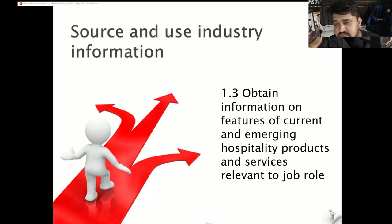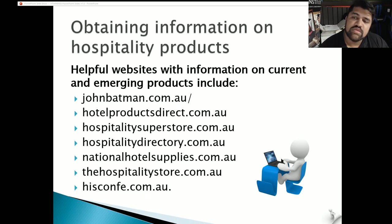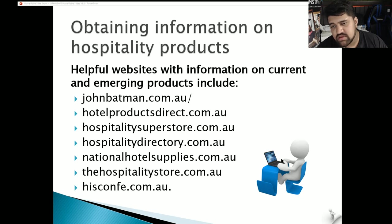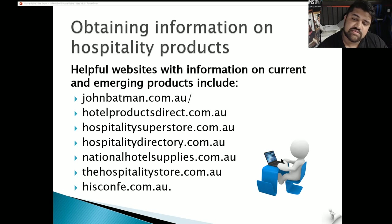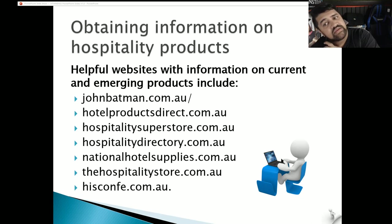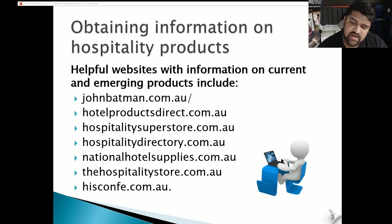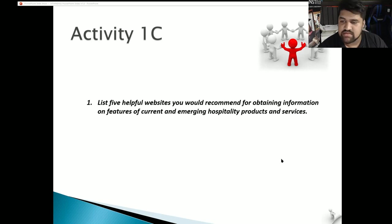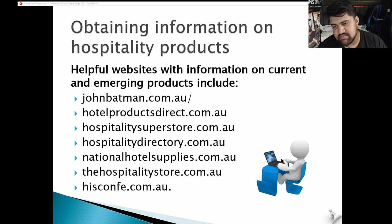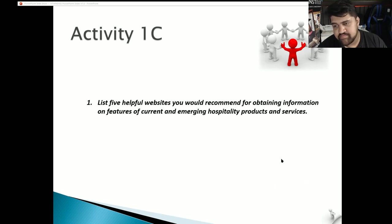Obtain information on features of current and emerging hospitality products and services relevant to the job role. Helpful websites with information on current and emerging products include John Bateman, Hotel Products Direct, Hospitality Superstore, Hospitality Directory, Hisconfi, The Hospitality Store, and National Hotel Supplies. For the activity, list five websites — you can pick from those listed or include some of your own. Once you're done, come back and we can move on to the next one.